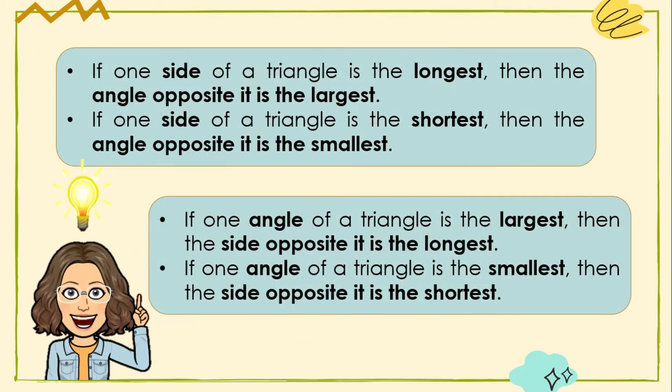Based on these two theorems, we can conclude the following relationships: if one side of a triangle is the longest, then the angle opposite it is the largest. Or vice versa, if one angle of a triangle is the largest, then the side opposite it is the longest. Moreover, if one angle of a triangle is the smallest, then the side opposite it is the shortest.